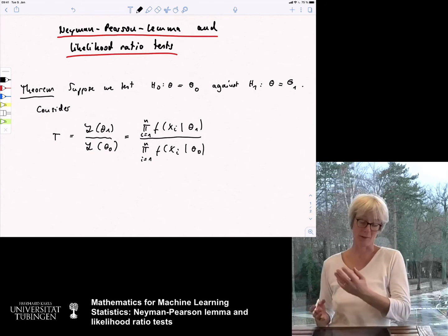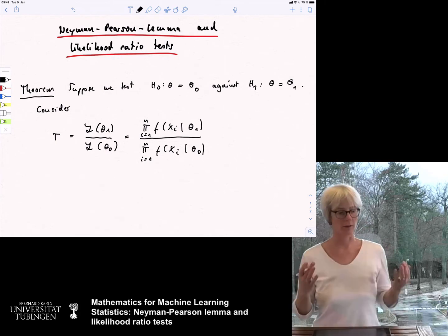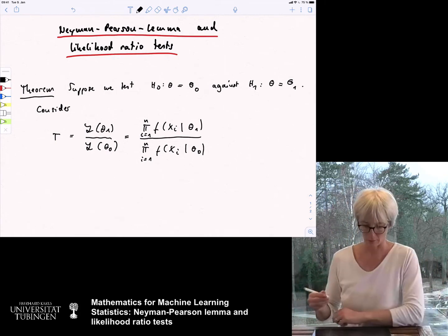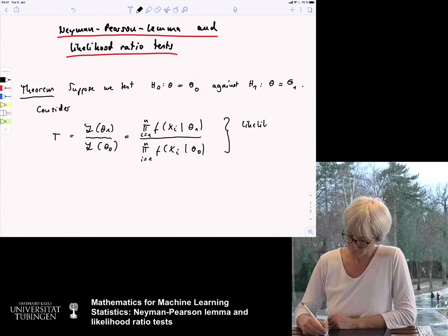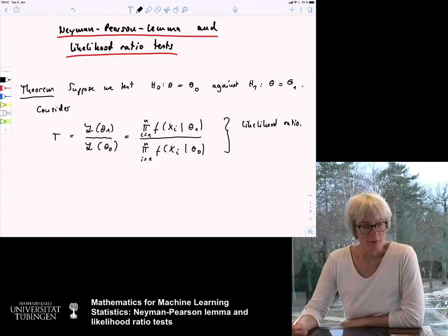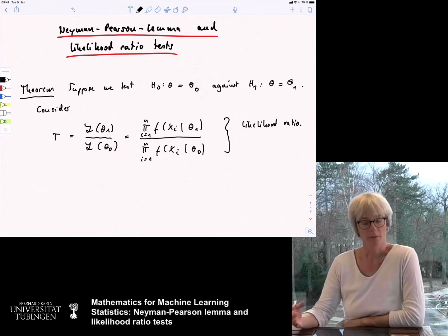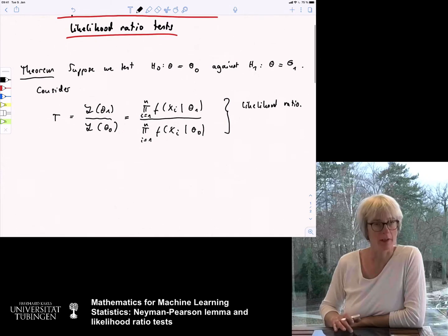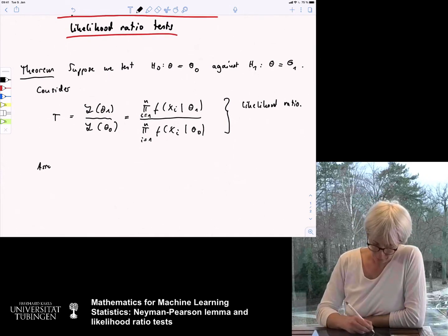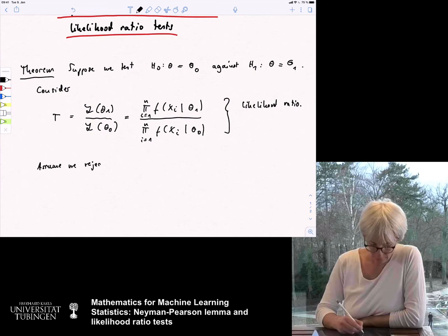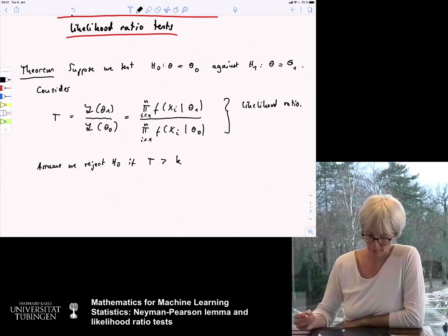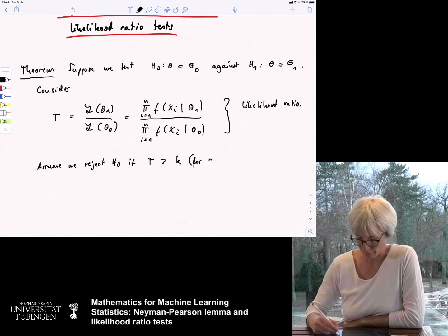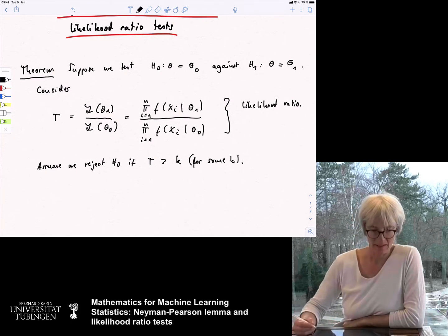So, what is the probability or the likelihood that this data has been generated if parameter theta 1 is true and what is if theta 0 is true? And this is called the likelihood ratio. And now, we reject the hypothesis, the null hypothesis, when this statistic T is larger than a certain threshold. Assume we reject h0 if T is larger than some parameter k.